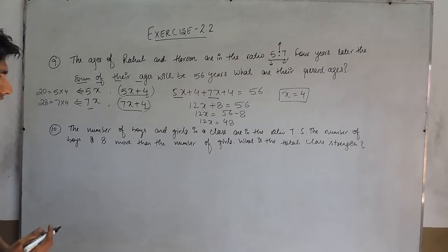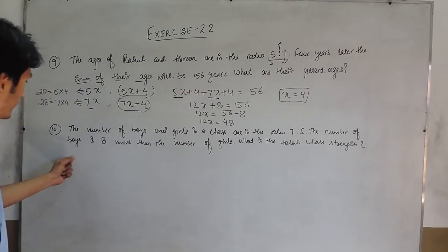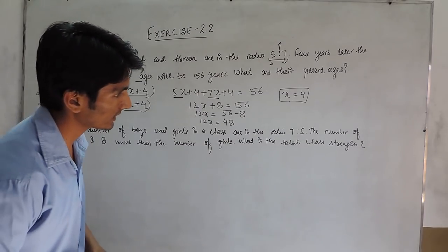In the next question, the number of boys and girls in class are in the ratio 7:5. The number of boys is 8 more than the number of girls. What is the total class strength?